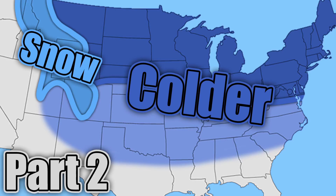Hello, everybody. In today's video, we're going to be going over a colder pattern for the eastern and central United States. This is part two out of two for this couple of videos we're doing on this topic. Yesterday's video was talking more about the surface temperatures, and today we're going to be talking more about the upper air maps, the teleconnections, things like that.